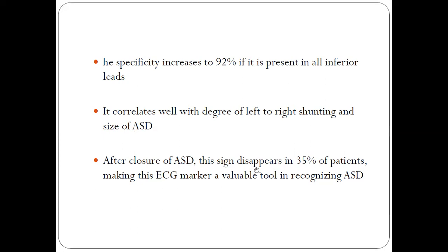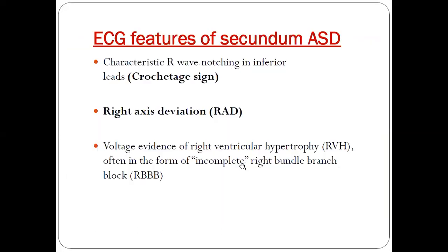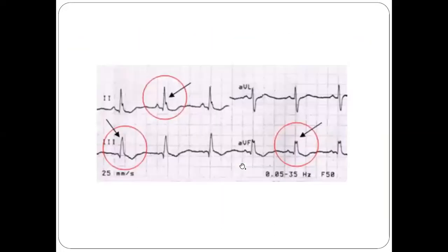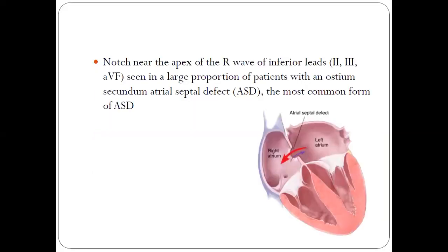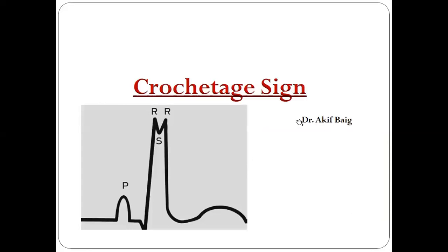After closure of ASD, this sign disappears in 35 percent of patients, whereas it may remain persistent in the remaining patients. This is all about the Crochetage sign, which is an important diagnostic clue for diagnosing ostium secundum ASD. If you have any queries, you can post them in the comment box — do share and subscribe to my YouTube channel, Dr. Akif Beg. Thank you.